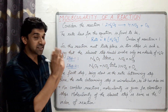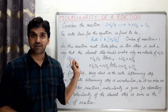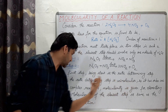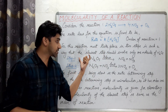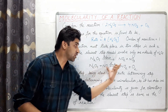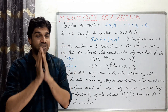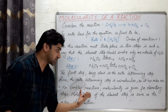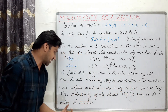Now, for complex reactions, molecularity is given for each elementary step. For the first step, molecularity is 1. For the second step, molecularity is 2 (1+1). So for complex reactions, we calculate molecularity for each step. The molecularity of the slowest step is the same as the order of reaction.